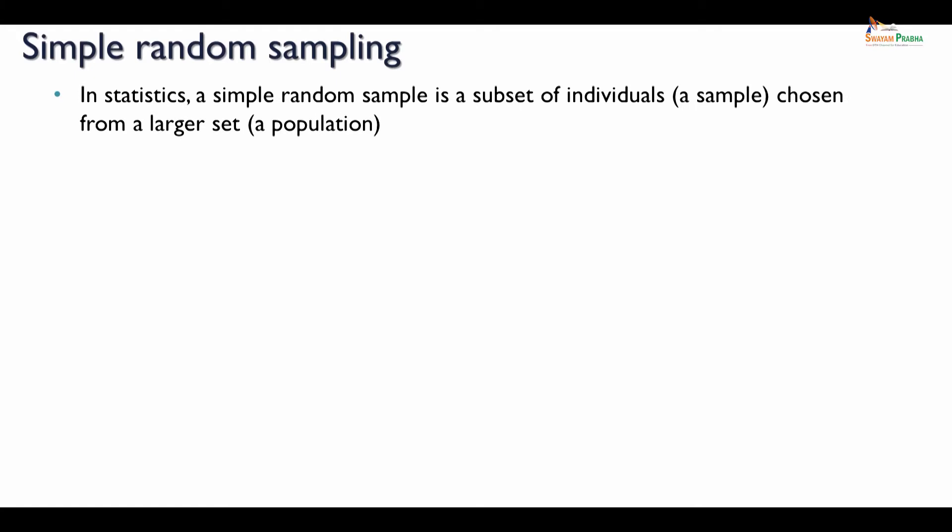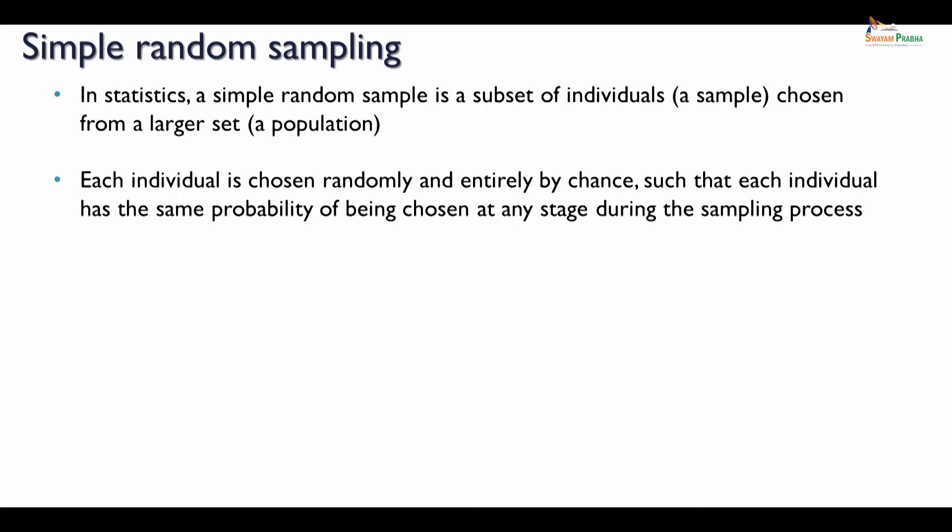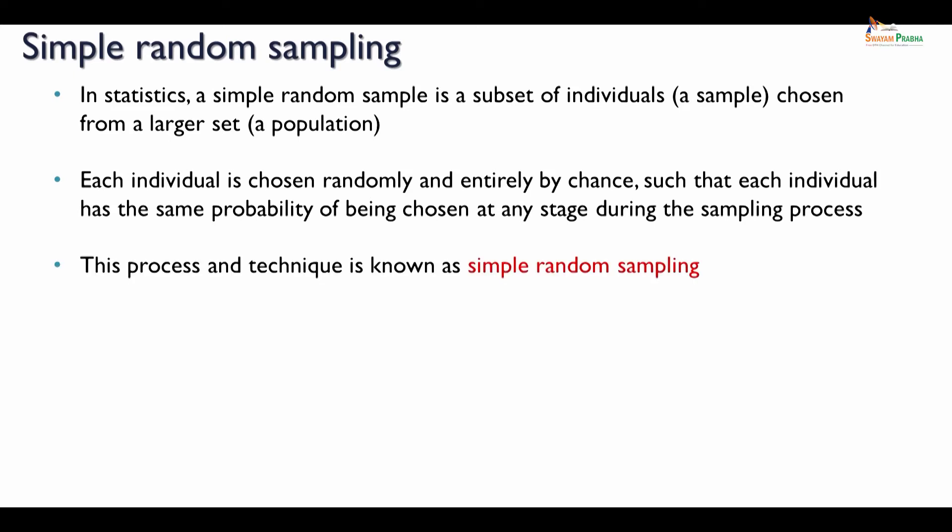In statistics, a simple random sample is a subset of individuals from the population. Here each individual is chosen randomly and entirely by chance, such that each individual will have an equal probability of being selected as a sample at any stage during the sampling process. If that has been done, then this process or technique is known as simple random sampling.